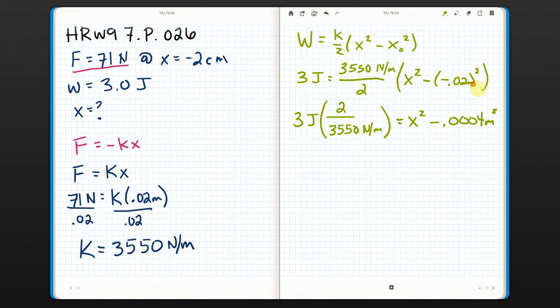Well, meters squared, I should have put a meter in there. So, all right, now I'm going to move this over here, so I'm going to add that to both sides. So, over here I've got, I'm going to do that 3 and that 2 times each other just to make it a little easier. So I got 6 joules over 3,550 newtons per meter plus 0.0004 meters squared equals x squared. Just to check, I've got meters squared here.